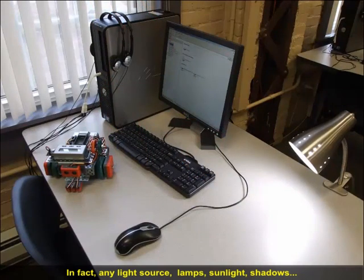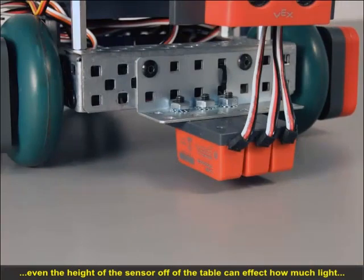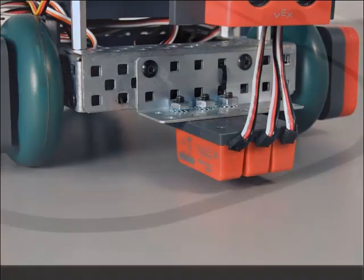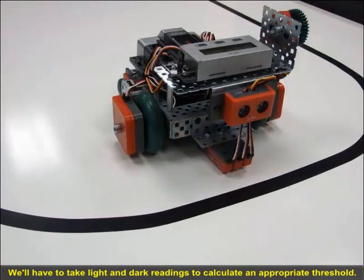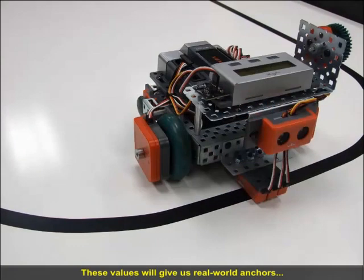In fact, any light source - lamps, sunlight, shadows, even the height of the sensor off the table - can affect how much light the line tracking sensor detects. We'll have to take light and dark readings to calculate an appropriate threshold. These values will give us real-world anchors that take into account the colors of surfaces and lighting conditions.